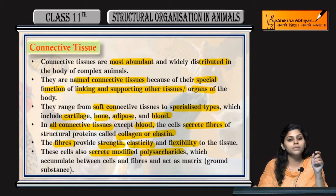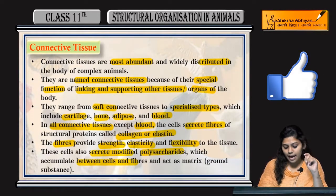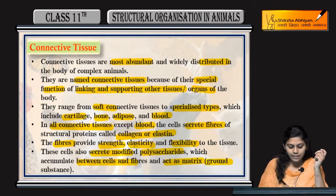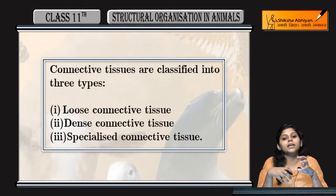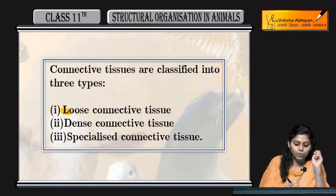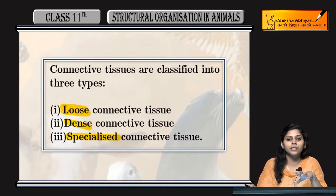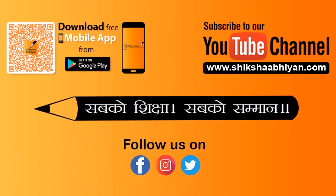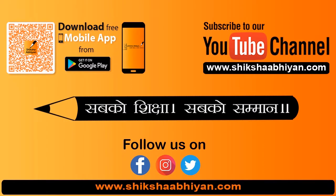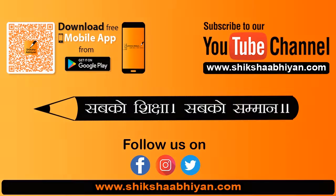Cells also secrete some modified polysaccharides, which accumulate between the cells and fibers and act as matrix, also called ground substance. Connective tissues are classified into three main types: loose connective tissue, dense connective tissue, and specialized connective tissue.